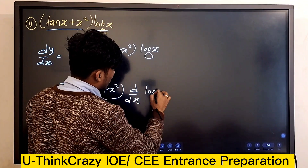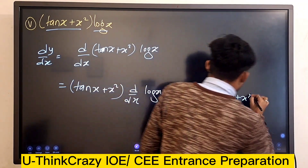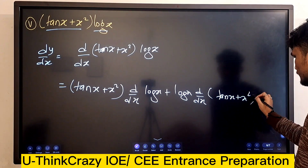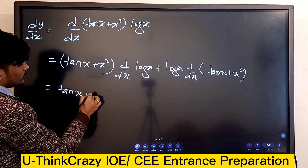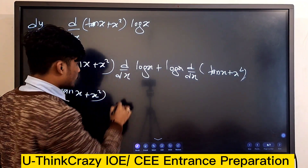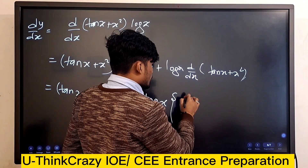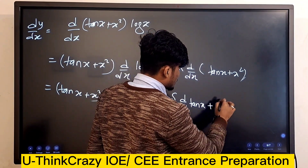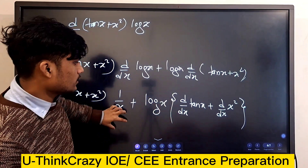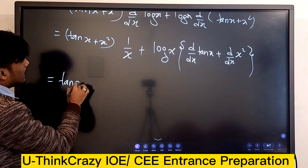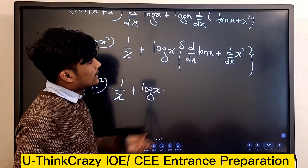You know it — log x times d/dx of tan x, plus x squared log x divided by x. So: log x times d/dx of tan x, plus d/dx of x squared. Using the product rule: tan x plus x squared times one over x, plus log x for the derivative of x squared.